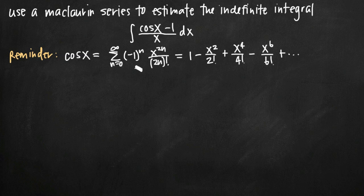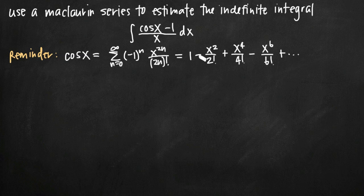Our starting point is going to be the Maclaurin series of cosine of x. We've got cosine of x in our function, so it's a good place to start. Because cosine of x is a well-known Maclaurin series, we know this is our Maclaurin series representation, and these are the first several terms of the cosine of x Maclaurin series.